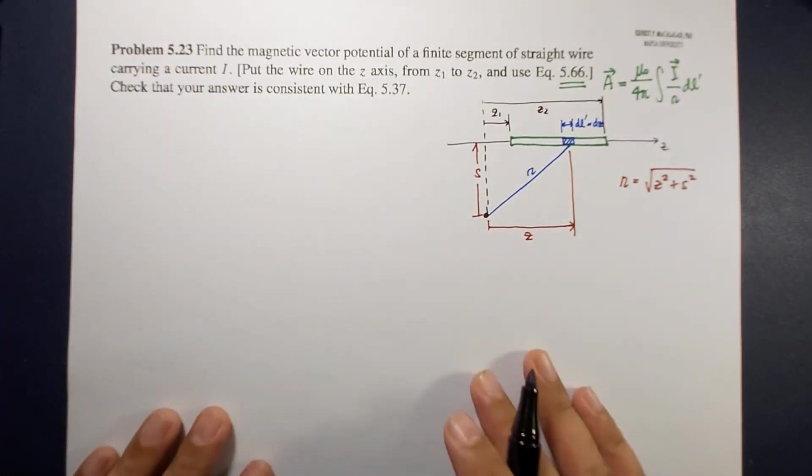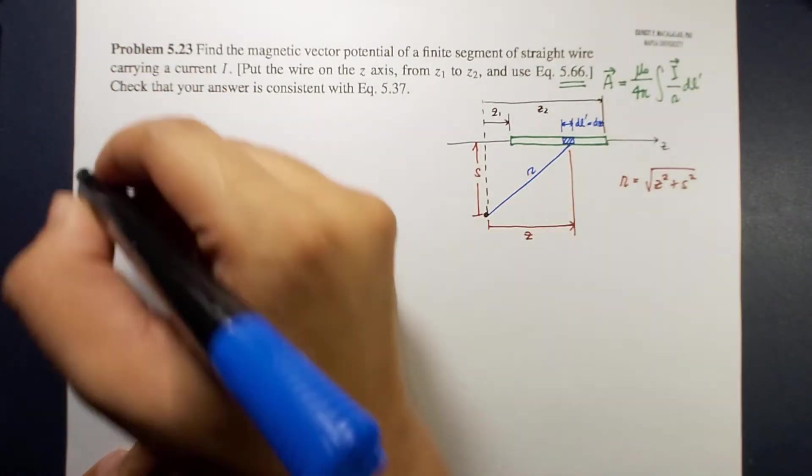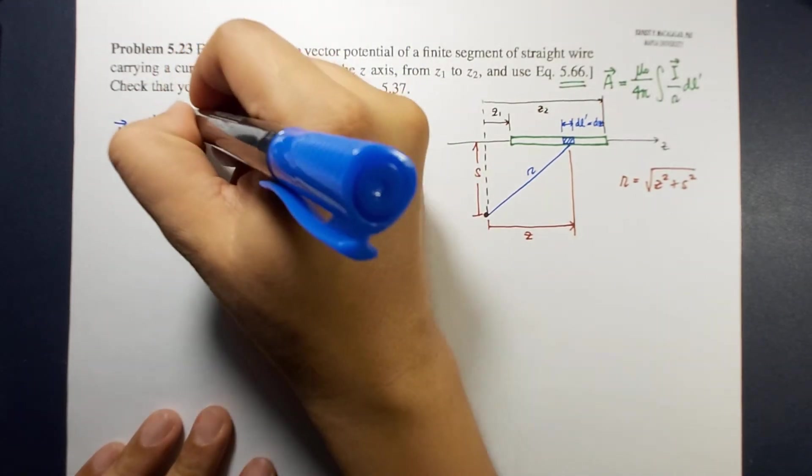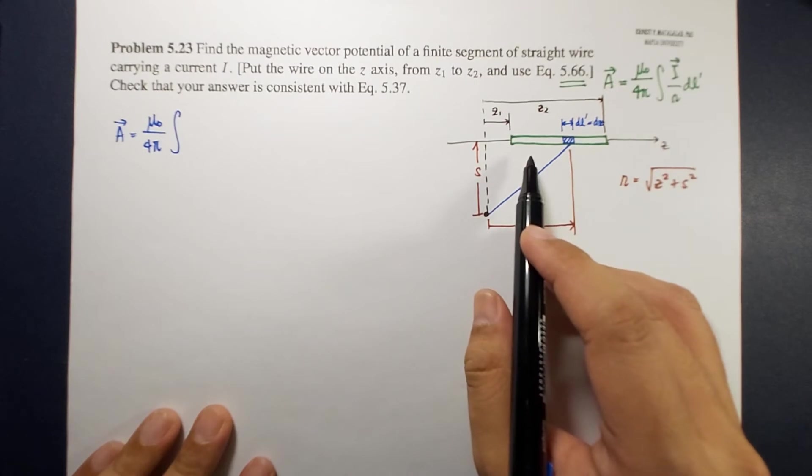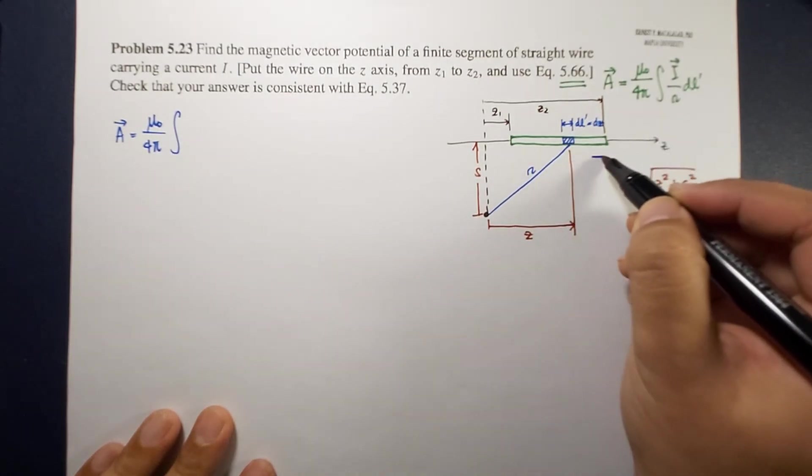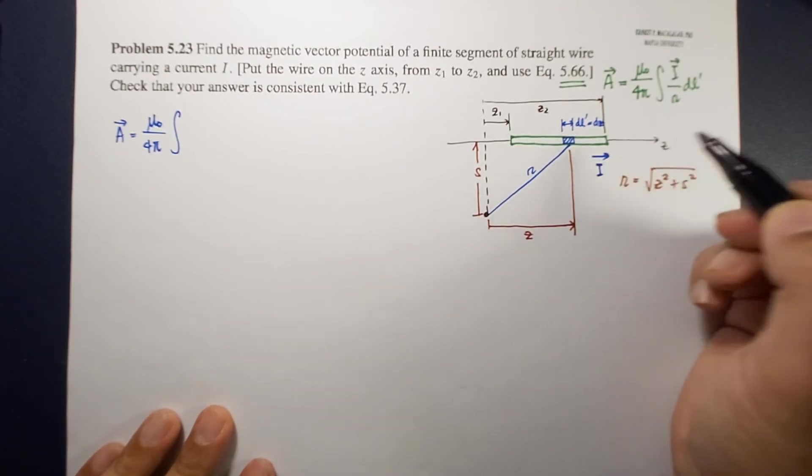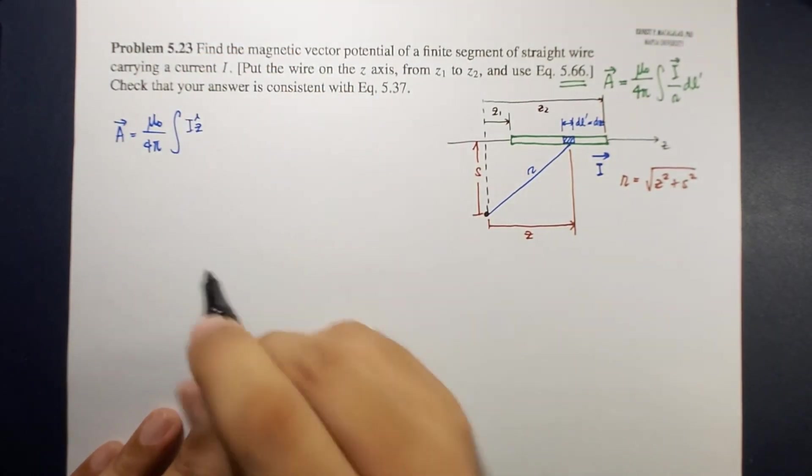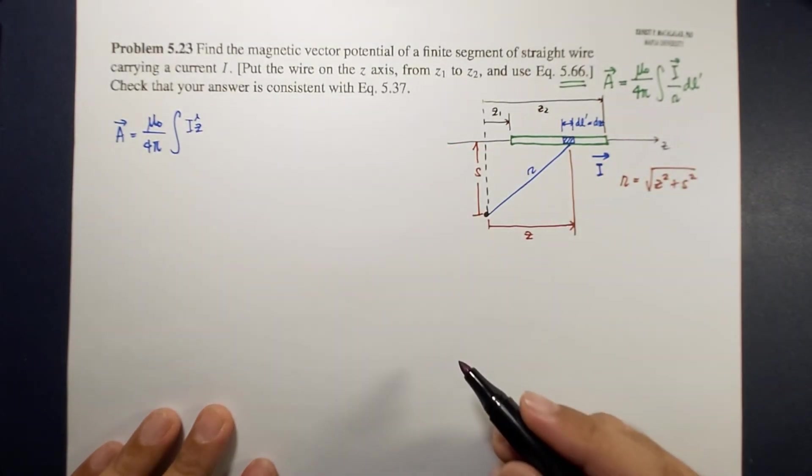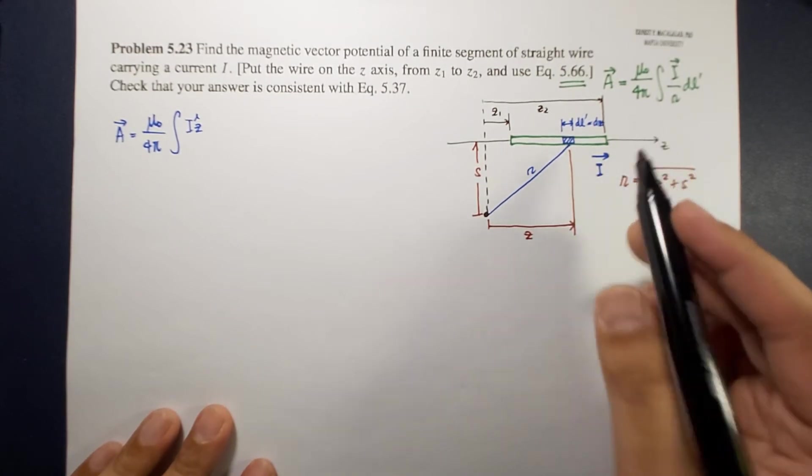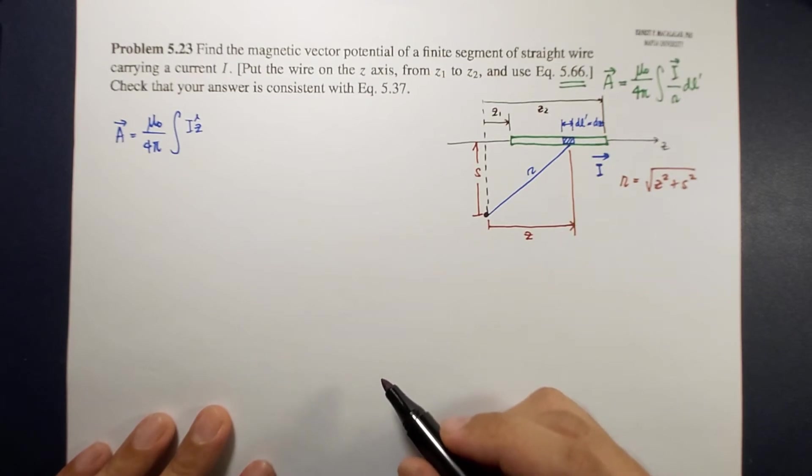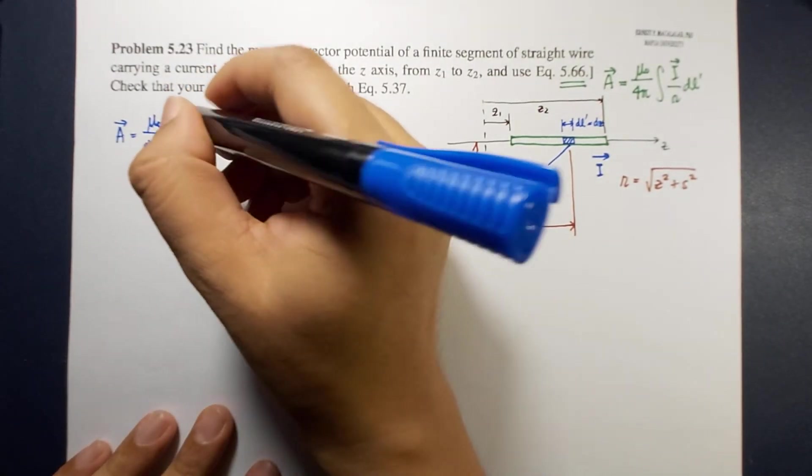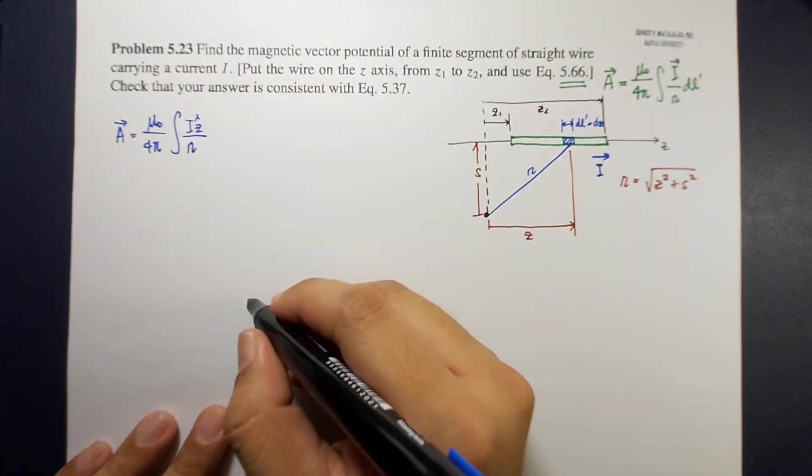So now let's build our equation using this equation. Vector potential is mu naught over 4 pi times the integral of i vector. So in this case if our current is in this direction, therefore our i vector would be i z hat. Remember it doesn't matter whether the i would be in this direction because since our z direction is also arbitrary, so it's reasonable to say that the current is flowing in the positive z direction. And then this is divided by script r dz.